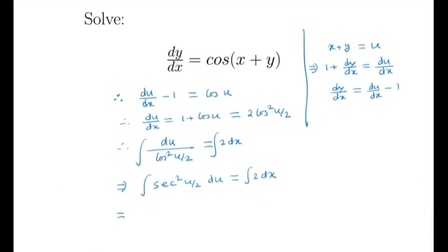The integral of secant squared u over 2 is nothing but 2 tan u over 2, and the right hand side we have 2x plus c.